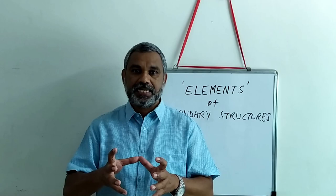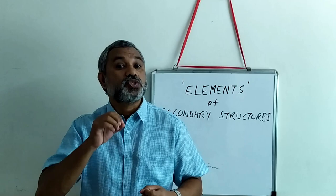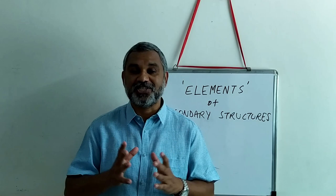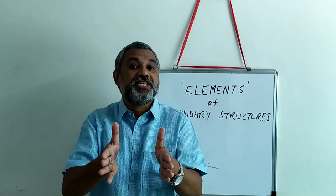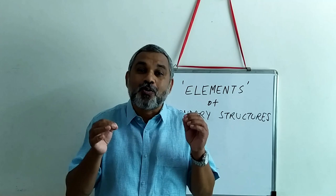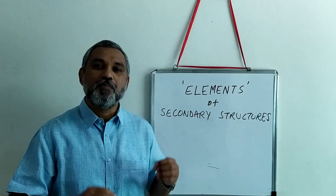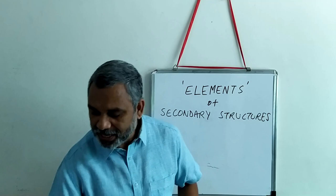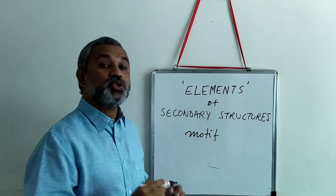These basic units, these basic foldings, form something called a super secondary structure or elements of secondary structure. The elements of secondary structure sit somewhere in between the secondary and tertiary structure — these are localized foldings, also known as motifs. We are going to discuss what exactly these motifs are.